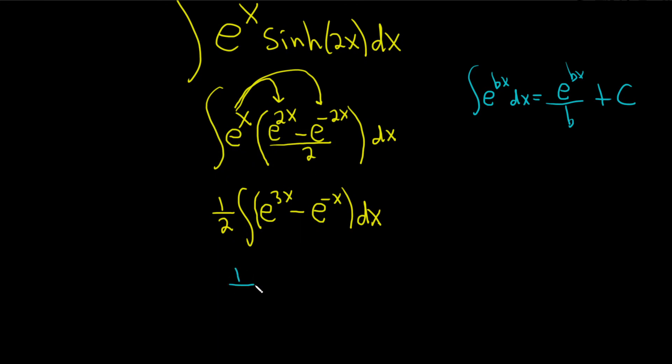So all we do here is just simply divide by the b's. So this is one-half, which I'll leave on the outside for now. This will be e to the 3x over 3 minus e to the negative x over, here it's really a negative 1 times x, so we divide by negative 1. And then we have plus capital C.